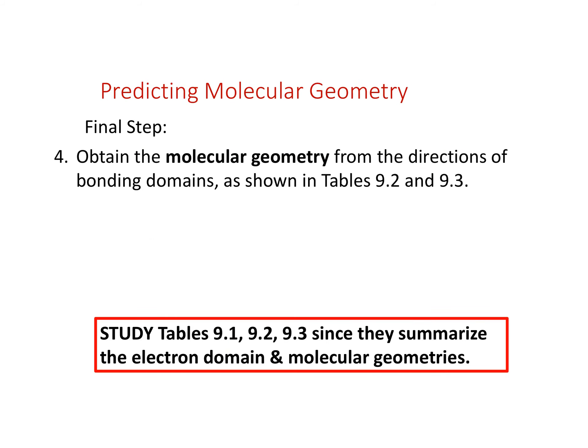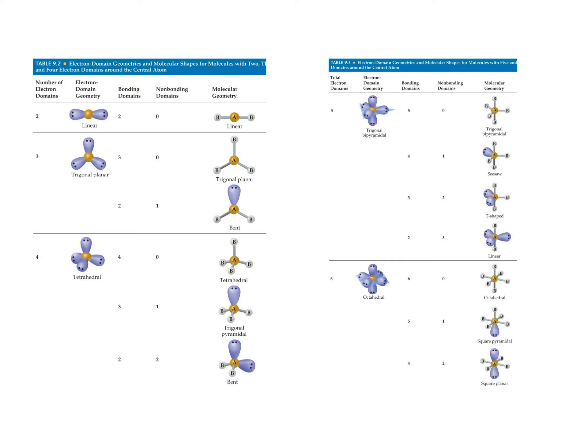The last step is to determine the molecular geometry based on the electron domain geometry. That depends on how many of the assigned electrons are bonding versus non-bonding. In the next module, we'll work through a table examining both the electron domain geometry and the resulting molecular geometry.